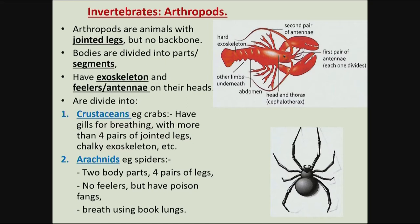All arthropods normally have feelers or antennae on their heads. The arthropods are divided into four main groups. The first group are the crustaceans, like crabs. Crabs breathe using gills, they have more than four pairs of jointed legs, and their exoskeleton is quite hard — we call it a chalky exoskeleton.